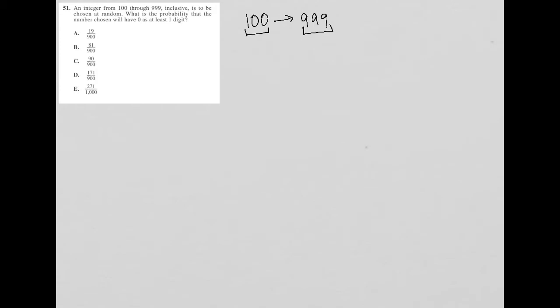So an integer from 100 through 999 inclusive is to be chosen at random. What is the probability? So again, anytime I see this word probability, and as you can see, this is a translate word problem, because as I read, first of all I read very slowly, I don't read the entire thing all at once. And as I read, I make sure to write down and translate the meaning of what I read.